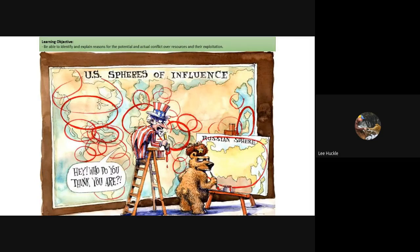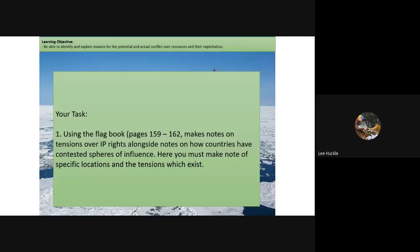We then brought this into the model of spheres of influence, looking at a map showing US spheres of influence around the world — the areas the US can directly and indirectly control. You would have then gone to the flag book, pages 159 to 162, and made detailed notes on tensions over intellectual property rights alongside notes on how countries contest these spheres of influence.